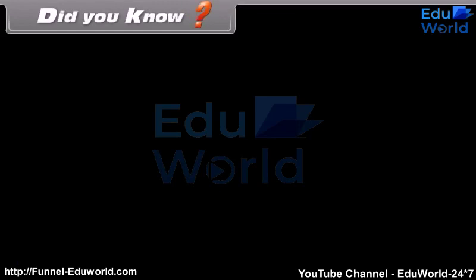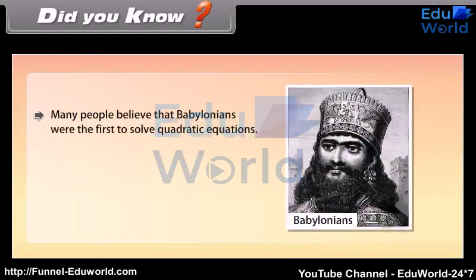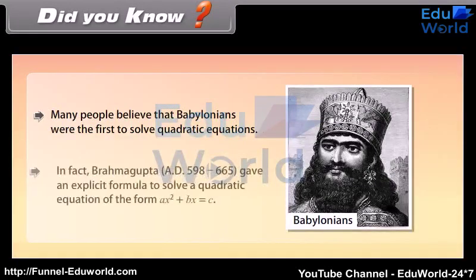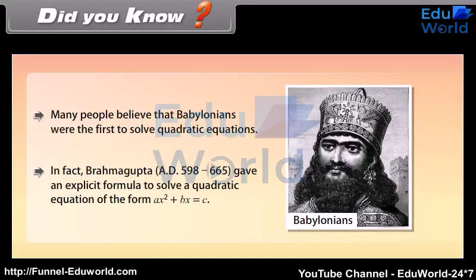Did you know? Many people believe that the Babylonians were the first to solve quadratic equations. In fact, Brahmagupta (AD 598–665) gave an explicit formula to solve quadratic equations.